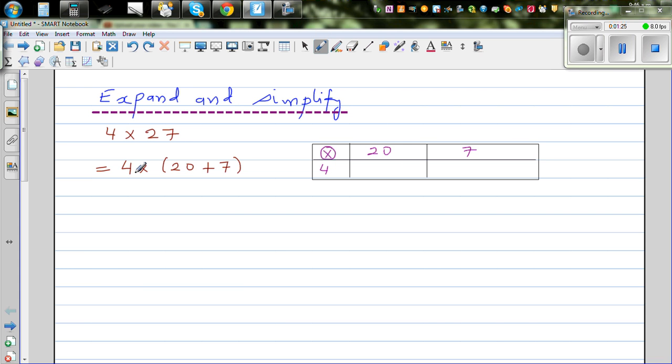4 times 27 is same as multiplying 4 times 20 plus 4 times 7. So you go 4 times 20, you know 4 times 2 is 8, so that is 80. And 4 times 7 is 28.